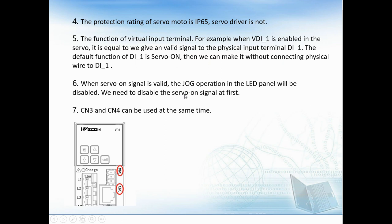Here are four more FAQ points. The protection rating of the servo motor is IP65, but the servo drive is not. Regarding virtual input terminals: when virtual digital input 1 is enabled in the servo, it is equivalent to giving a valid signal to physical input terminal DI1. The default function of DI1 is servo-on, so we can activate it without connecting a physical wire to DI1. When the servo-on signal is valid, the JOG operation from the LED panel is disabled — we need to disable the servo-on signal first. Finally, CM3 and CM4 can be used at the same time with no problem.